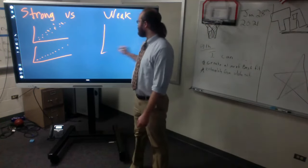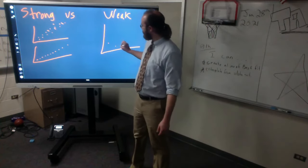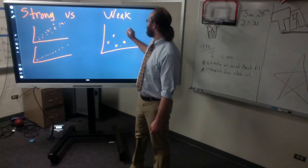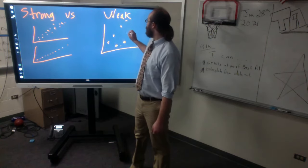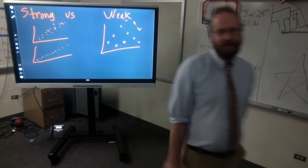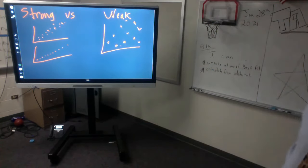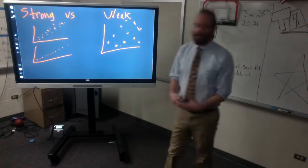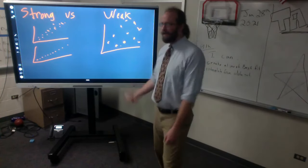So a weak correlation still has a general trend, but the dots are a little bit more spread apart. It's generally a positive trend. It's generally going up, but there's a couple of them that don't really work and are very spread out from the line of regression.